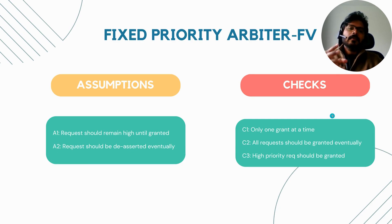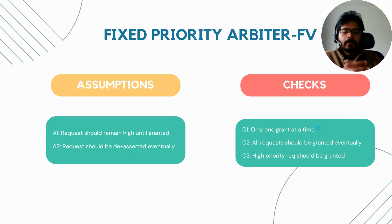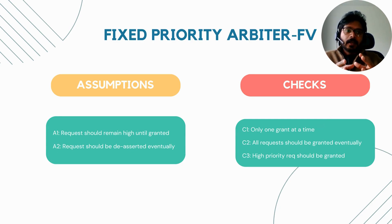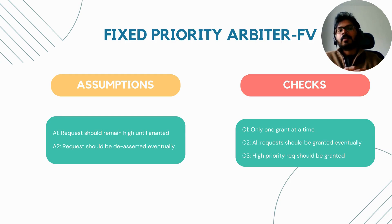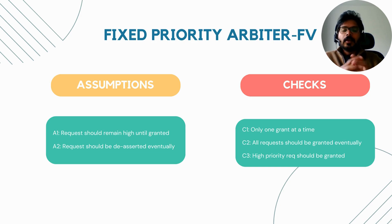We will discuss two different approaches to verify fixed priority arbiters today: one is the case with symbolic variables, and the second is the case without symbolic variables. We'll look at the case without symbolic variables first.